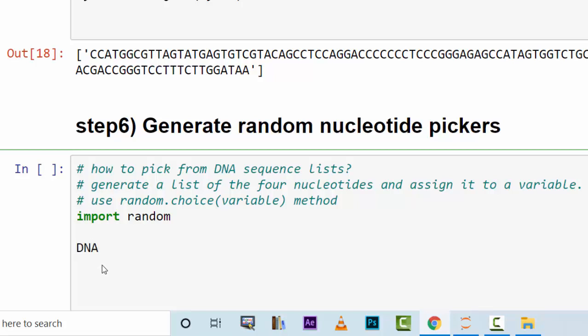Say DNA sample equals adenine, or thymine, guanine, or cytosine. Picker equals, the picker is a variable, random dot choice. Choice is the name of the function, a method that you can use in order to pick from DNA sample variable.